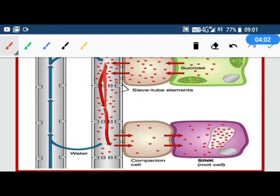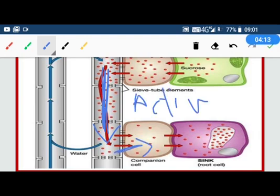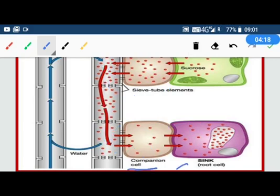Water carries all the sucrose to the roots. At the root, sucrose is removed from phloem by active transport and stored in root cells in the form of starch.